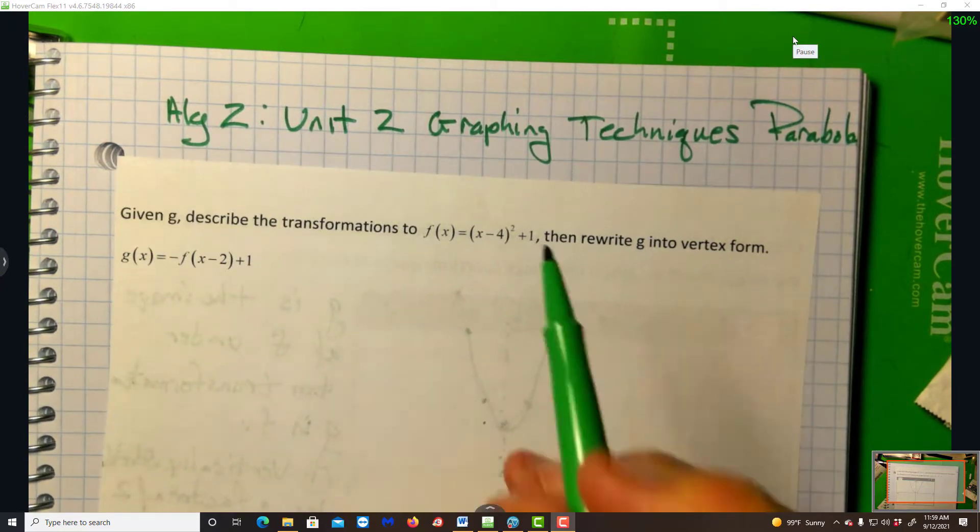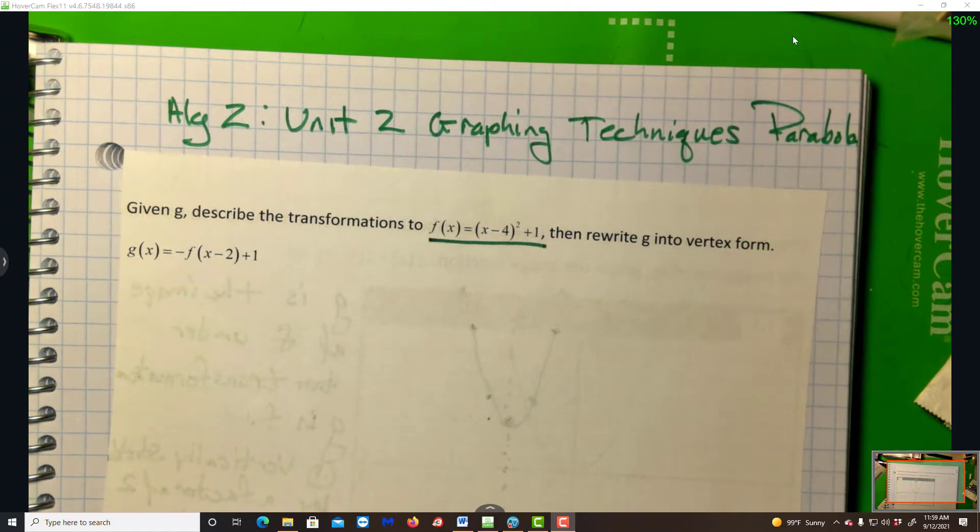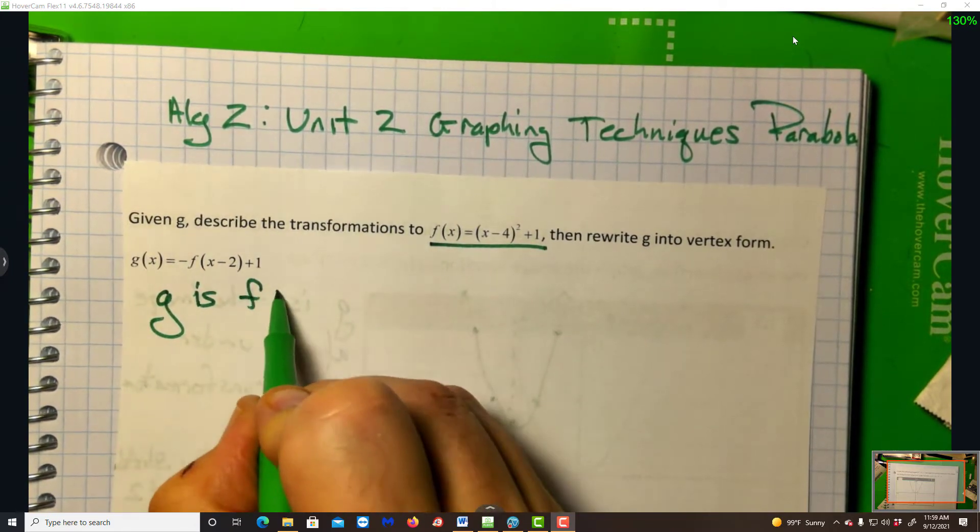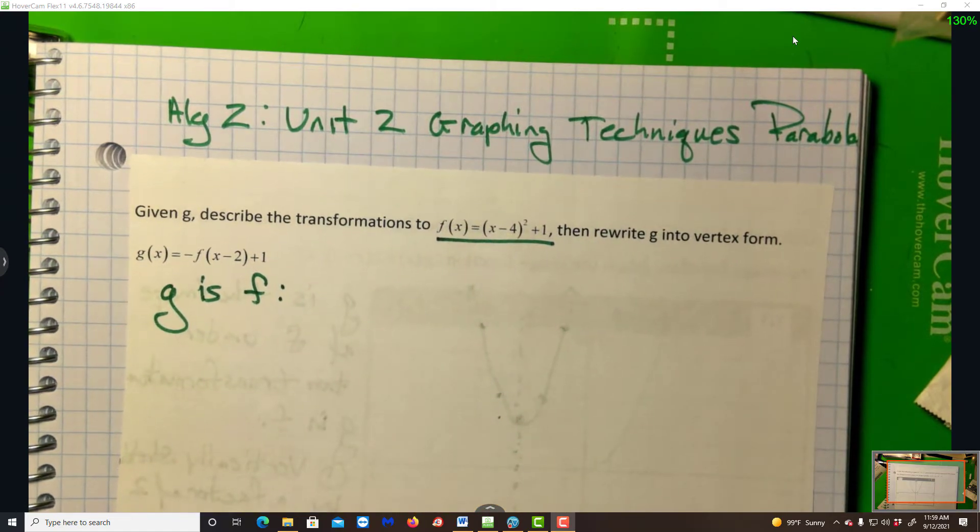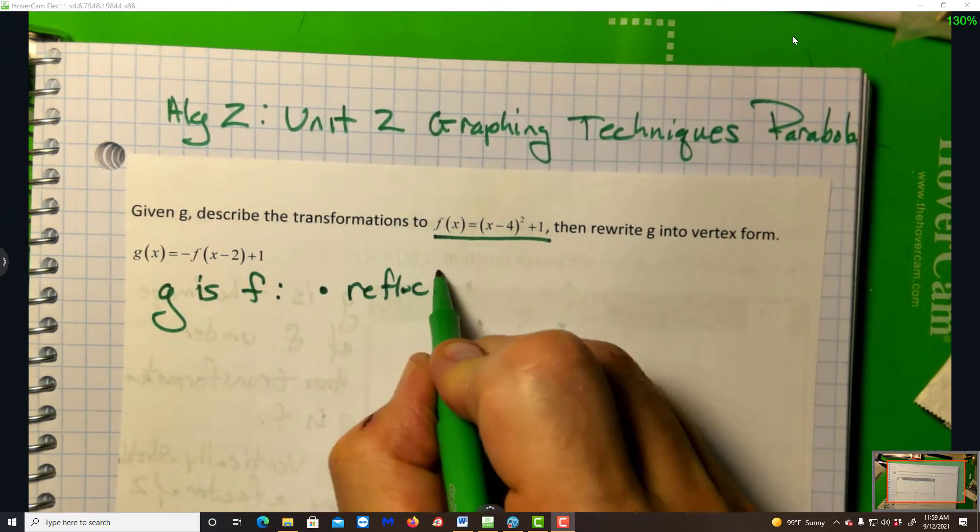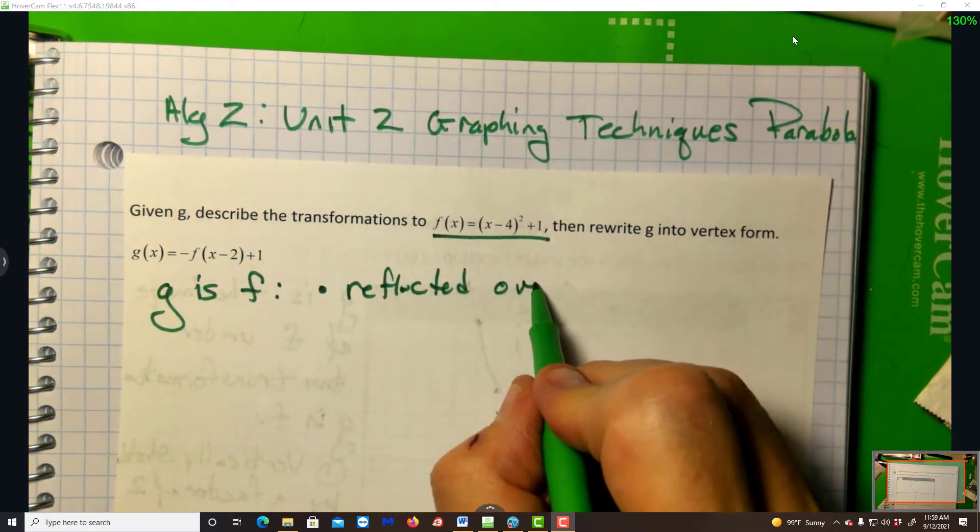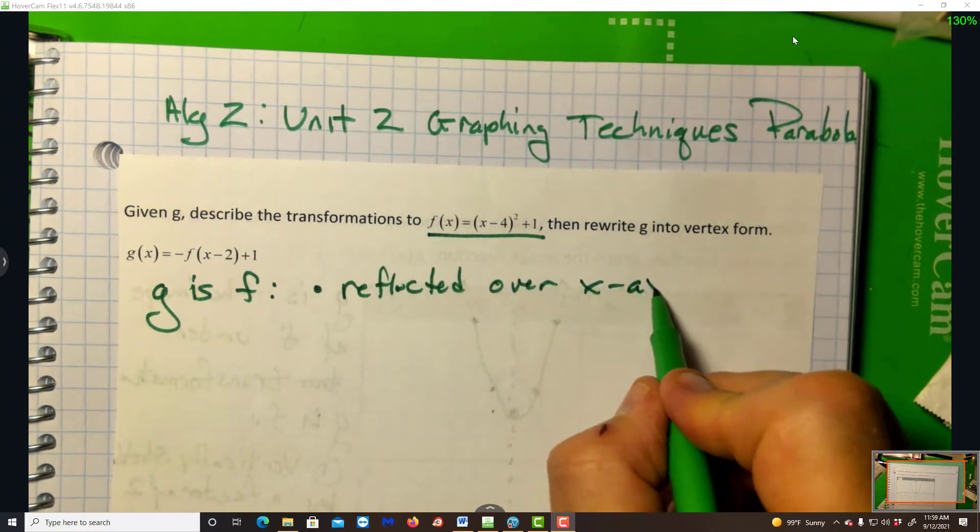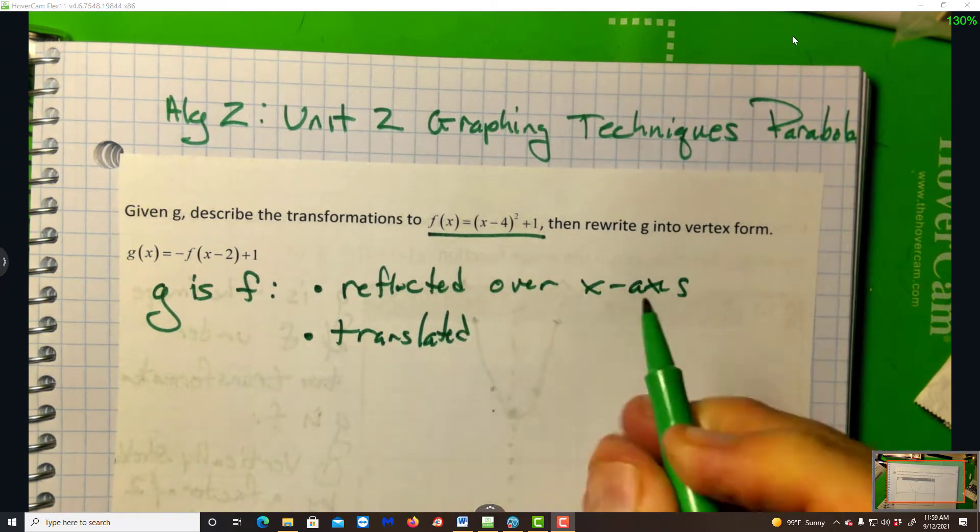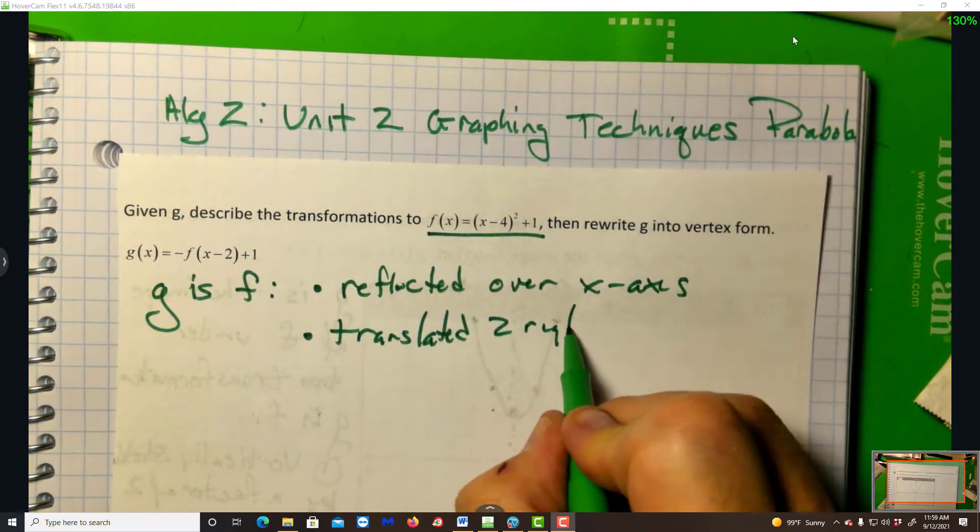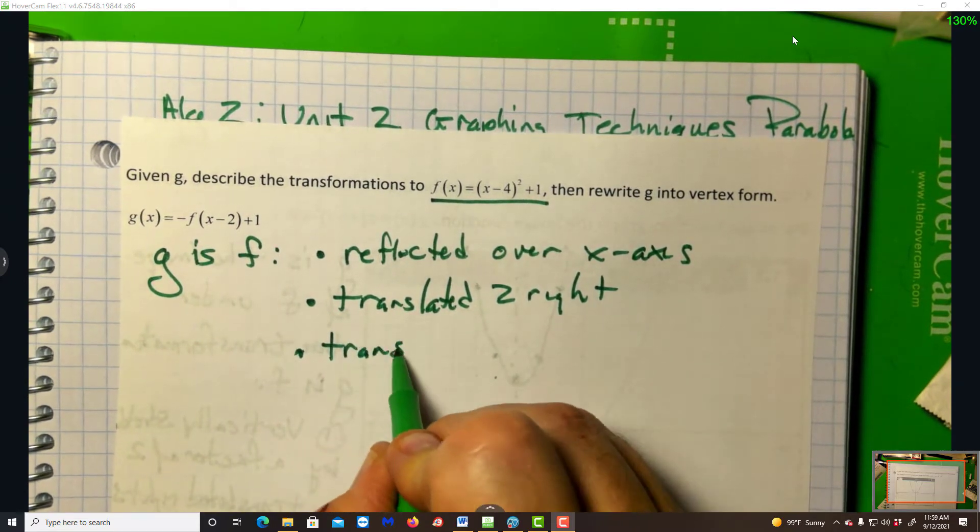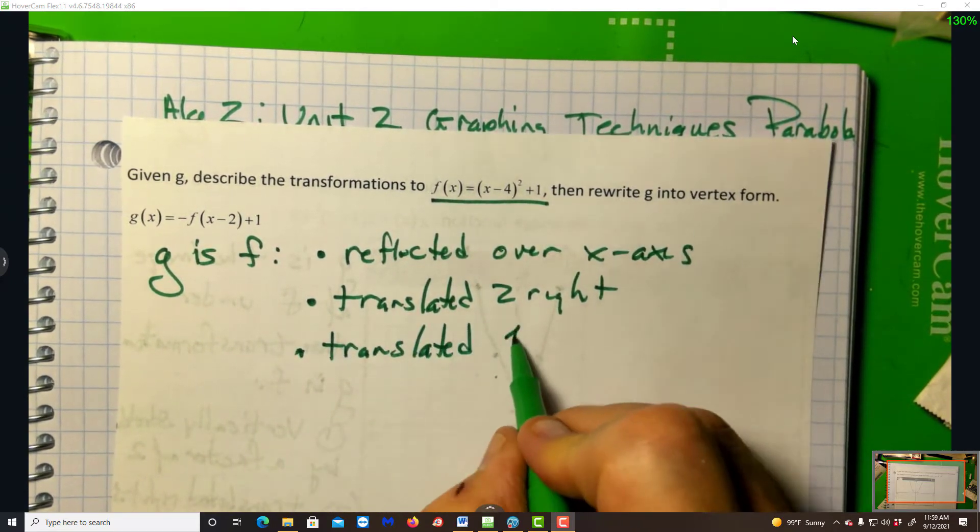Now, this is now going to be my parent function. So G is F. Do we have any multiplications? We do. Reflected. Since it's outside, it's over the x-axis. Translated right, and translated one up.